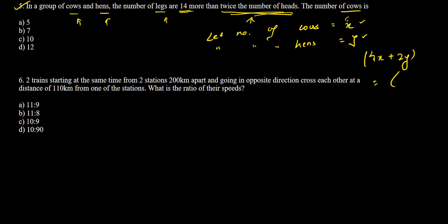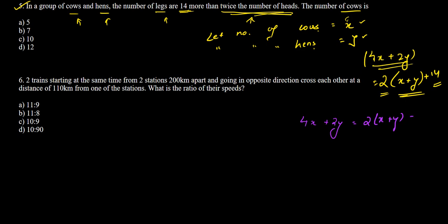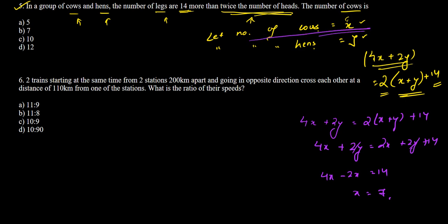The total number of heads is x plus y since each animal has one head. The condition states: 4x plus 2y equals 2(x plus y) plus 14, which simplifies to 4x plus 2y equals 2x plus 2y plus 14. Cancelling 2y from both sides gives 2x equals 14, so x equals 7. The number of cows is 7, which is option B. Moving on to question 6.